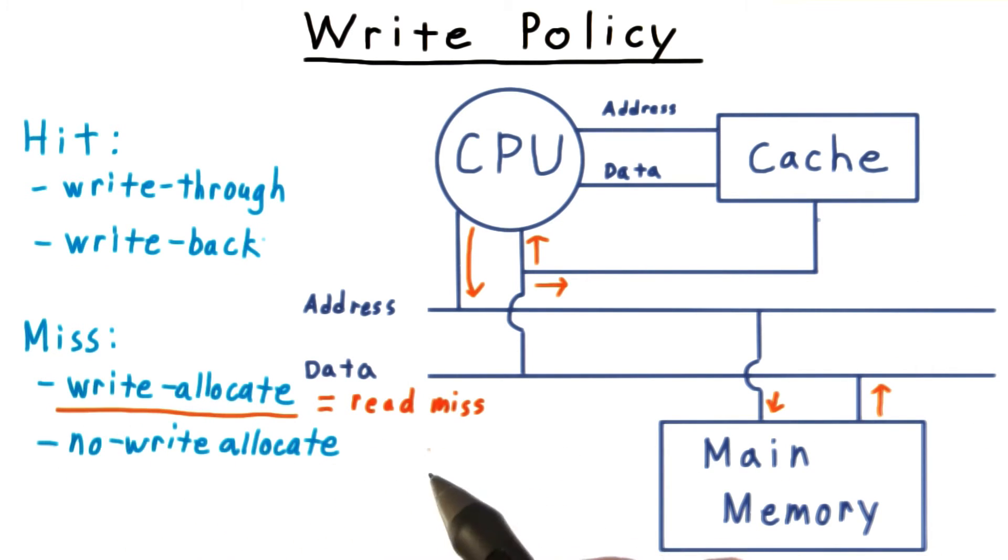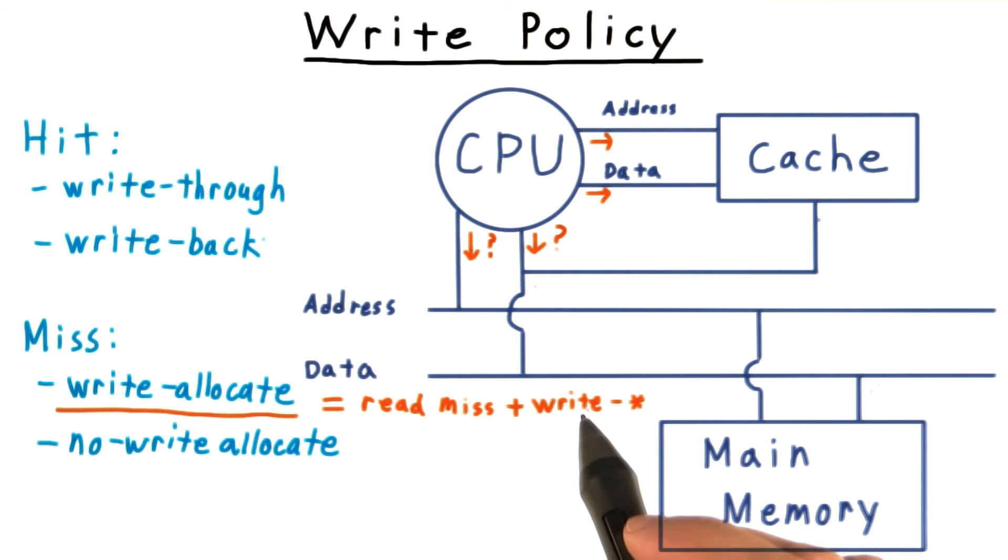For cache misses, we also have two strategies. The first is write-allocate, which first reads the current value in memory into the cache. Then it behaves as though it were a hit, using either of the two hit strategies.